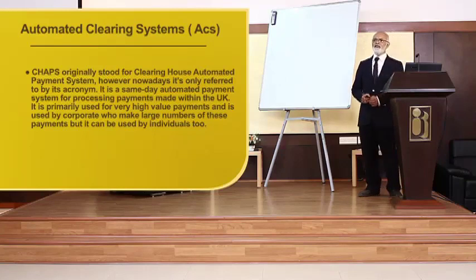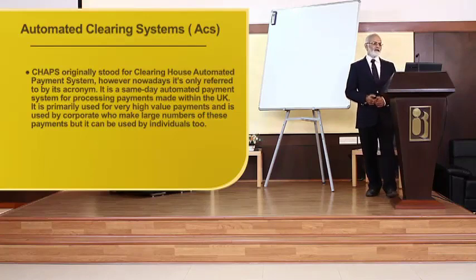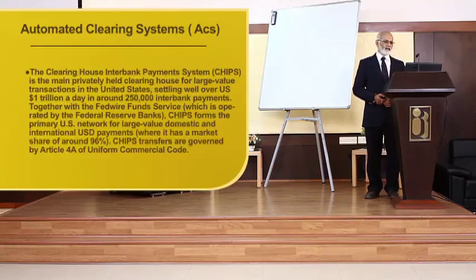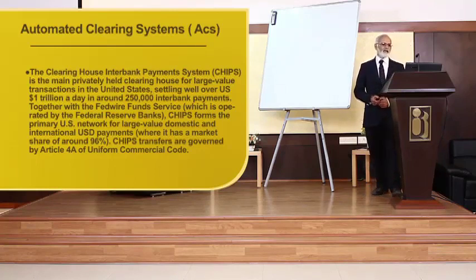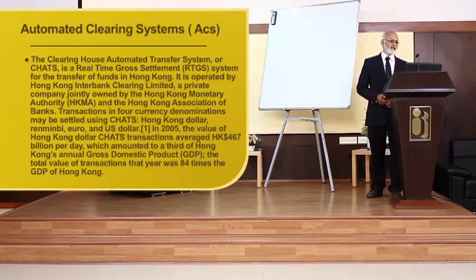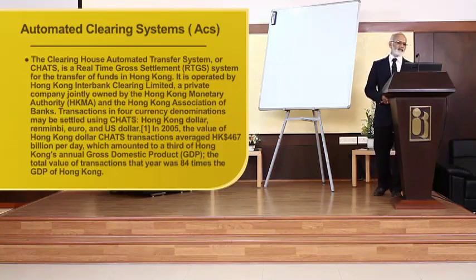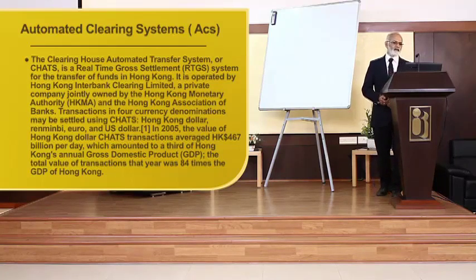Automated Clearing Systems are more widely popular in Western countries. CHAPS originally stood for Clearing House Automated Payment System, though nowadays it is only referred to by the acronym CHAPS. CHIPS — Clearing House Interbank Payment System — is the main privately held clearing system and forms the primary US network largely for large-value domestic transactions. CHATS — Clearing House Automated Transfer System — is another real-time gross settlement system used in Hong Kong and other countries since 2005.